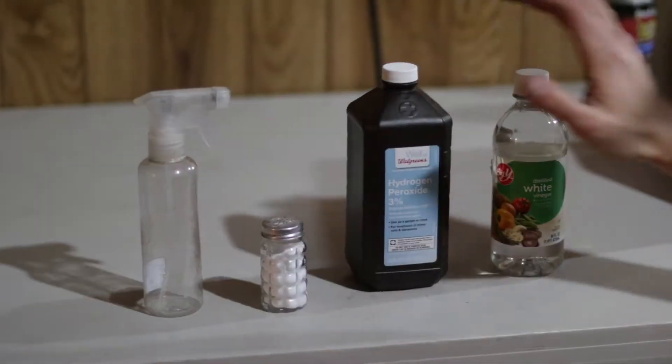So there's three main components behind the chemistry of rust: there's water, iron, and oxygen. Alright, so these are the main ingredients.